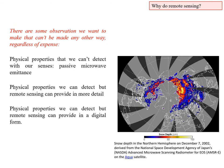There are also observations we want to make that just can't be made any other way, regardless of expense. Some physical properties we can't detect with our senses — for example, passive microwave emittance, the intensity of microwaves emitted from the land surface, is useful for snow depth mapping but undetectable by our senses. Remote sensing can also provide properties in more detail or in a digital form that allows mathematical and statistical approaches to turn them into information products.